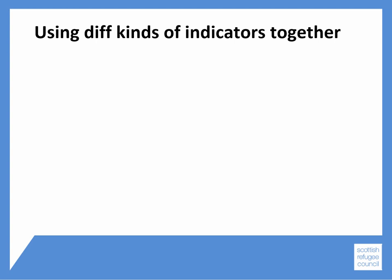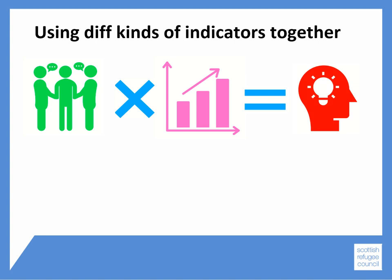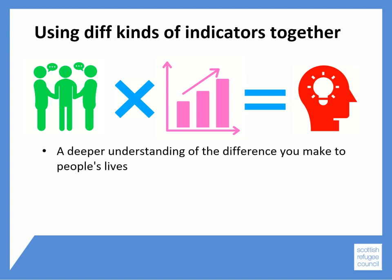As well as using hard or soft indicators separately, you can combine them and use them together. So if you're capturing the experiences and testimony of people who use your services, thinking about these at scale — in terms of the numbers of people who use your service over a particular period, say a year — will start to give you insights into the differences it's making, not only for the individual users, but for your community as a whole. This will provide a deeper understanding of the difference you make to people's lives individually and collectively, and how many people are benefiting from it.